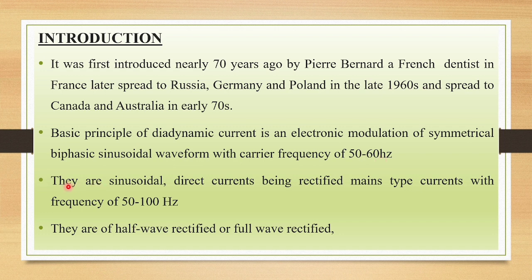Diadynamic currents are sinusoidal currents and direct currents being rectified, with a frequency of 50 to 100 Hz. This diadynamic current is a sinusoidal type of current which is rectified, with a frequency of 50 to 100 Hz, and they are either half wave rectified or full wave rectified. So two types of rectification are present in this particular current.